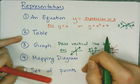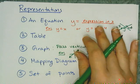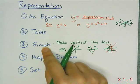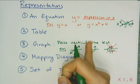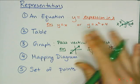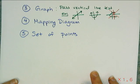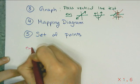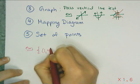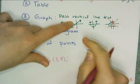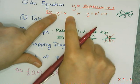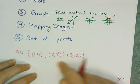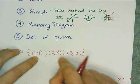Let's look at the other three representations — a set of points, a table, and a mapping diagram — which require a little more analysis. I'm going to convert a set of points into a mapping diagram to see if it's a function. For a mapping diagram, you make an oval representing all the x values and another oval representing all the y values. In the x oval, you list the domain members, and in the y oval you list the y values.